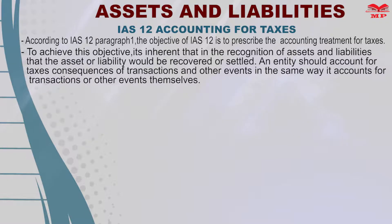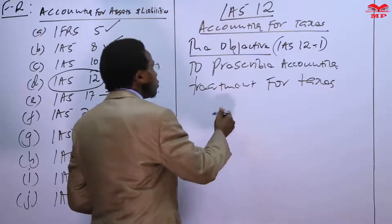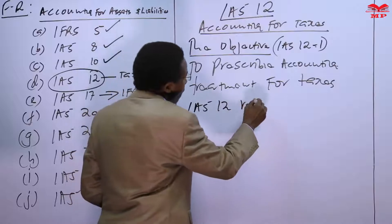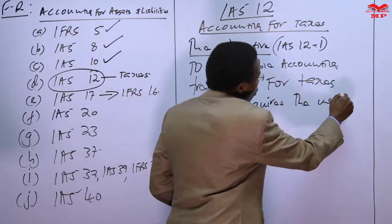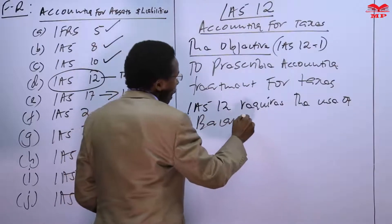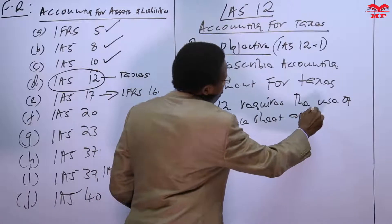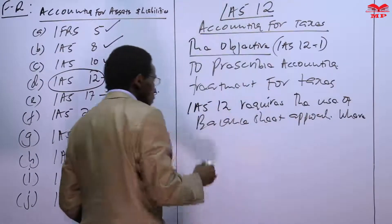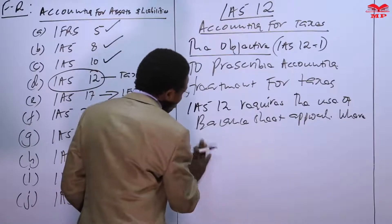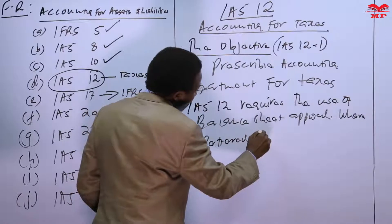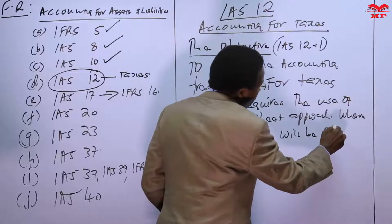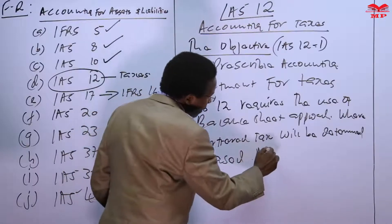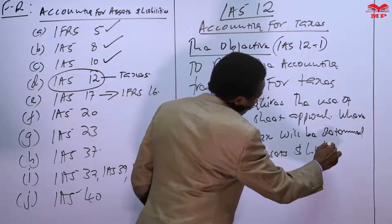When we come to IAS 12, we normally use the balance sheet approach — the balance sheet approach or the recognition approach — where deferred tax will be determined based on assets and liabilities.